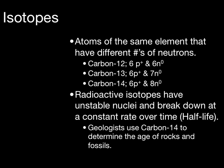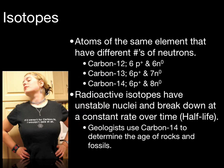Radioactive isotopes have unstable nuclei and break down at a constant rate over time — this is called a half-life. Geologists use some isotopes, such as carbon-14, to determine the age of rocks and fossils. Some half-lives are short, some are very long, but the important thing to remember is that a half-life is a constant rate over a period of time.